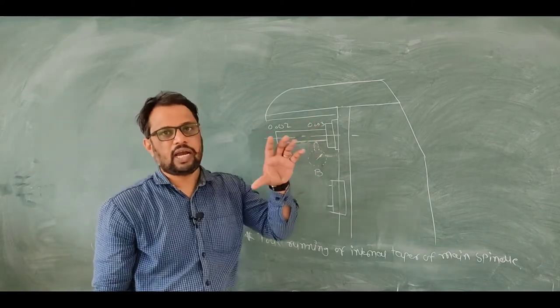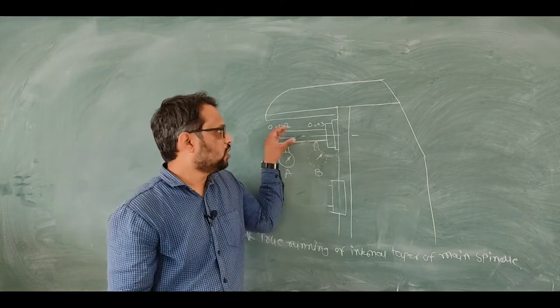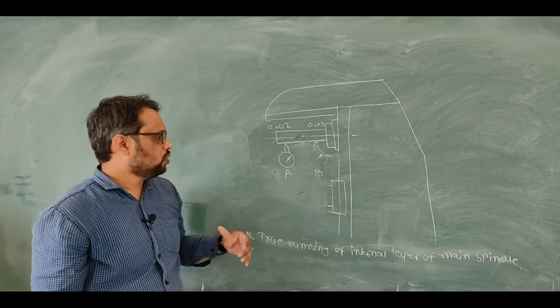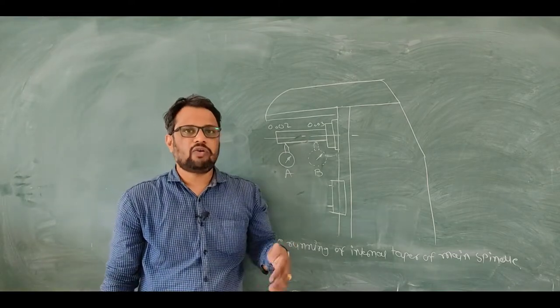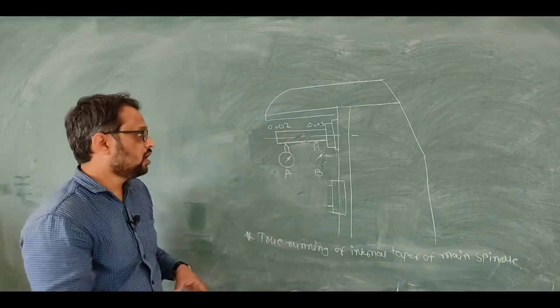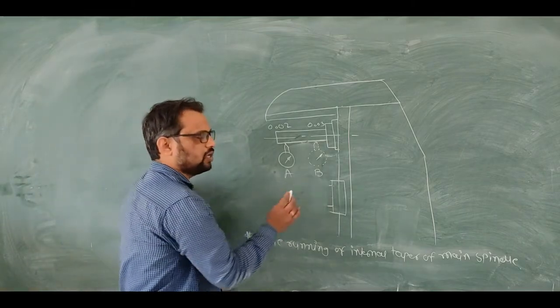In this main spindle. So for checking of true running of internal taper of main spindle, for this purpose what I have done, I positioned a dial indicator at position A and position B.